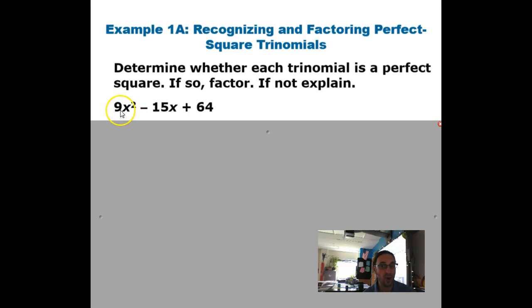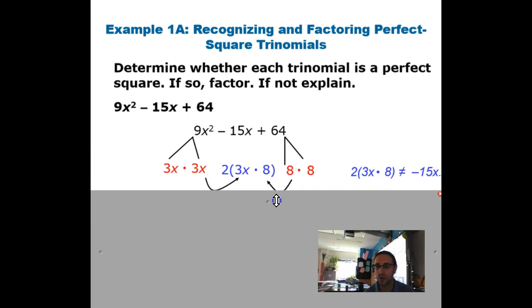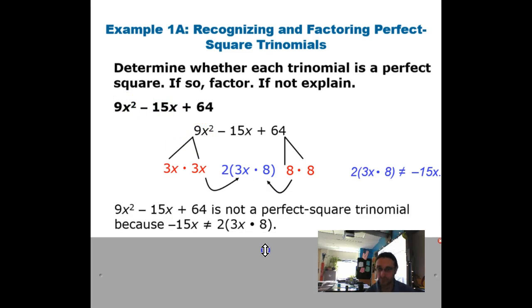Hey, 9x squared, that's a perfect square, 3x. 64, that's a perfect square, that's just 8. But is the middle 2 times 1 factor of this and 1 factor of this? Well, when we actually go for it and play it out, we find 2 times 3x times 8. Wait a minute, 2 times 3x is 6x. 6x times 8 is 48x. That is definitely not negative 15x. So therefore, this example is not a perfect square.